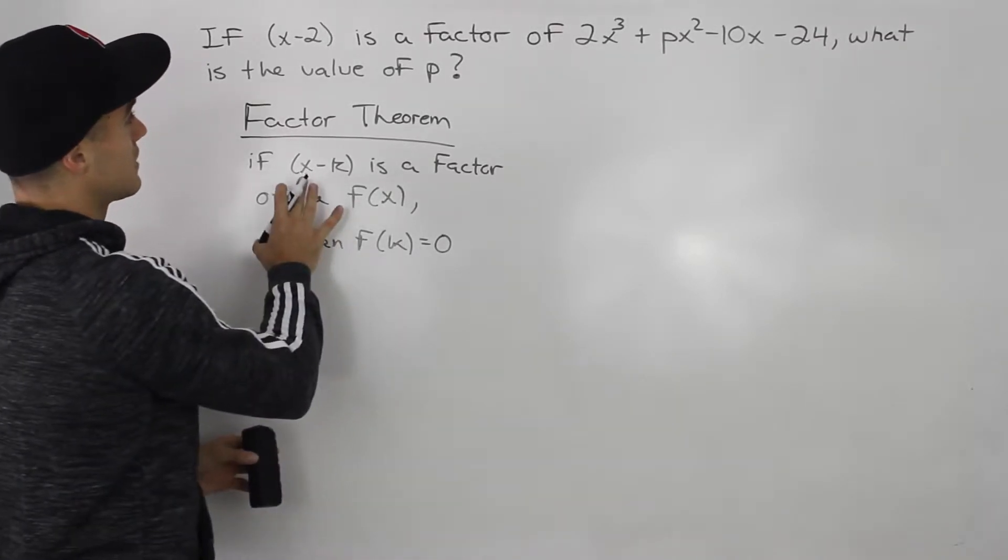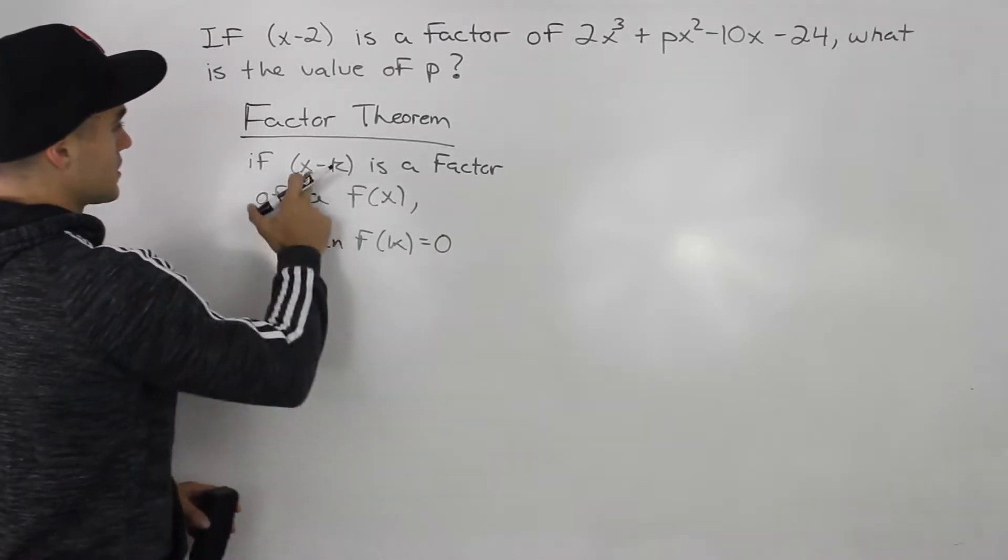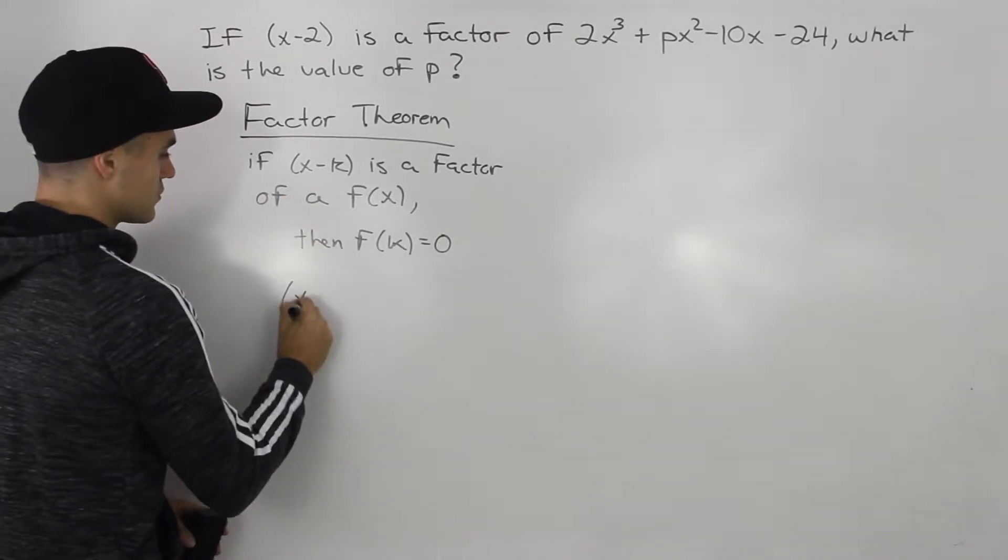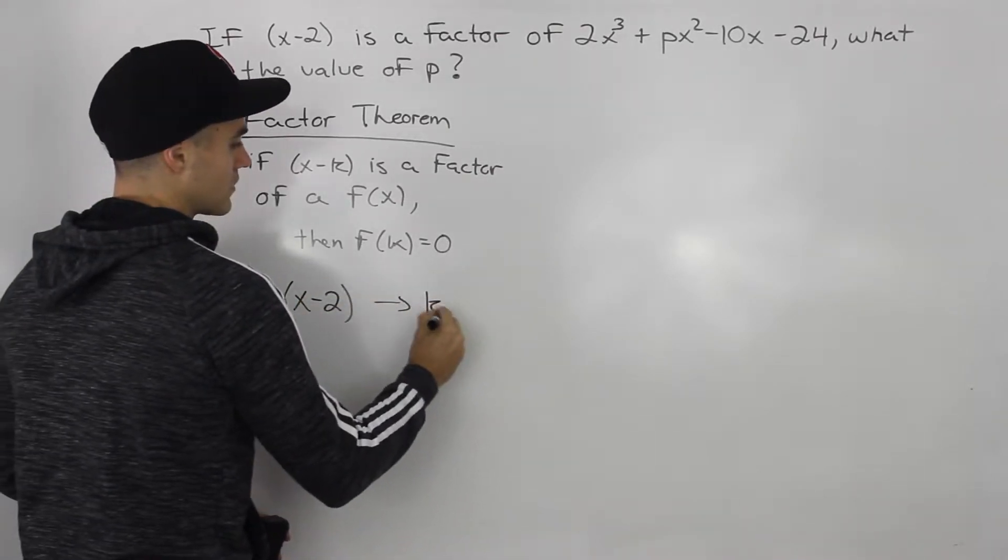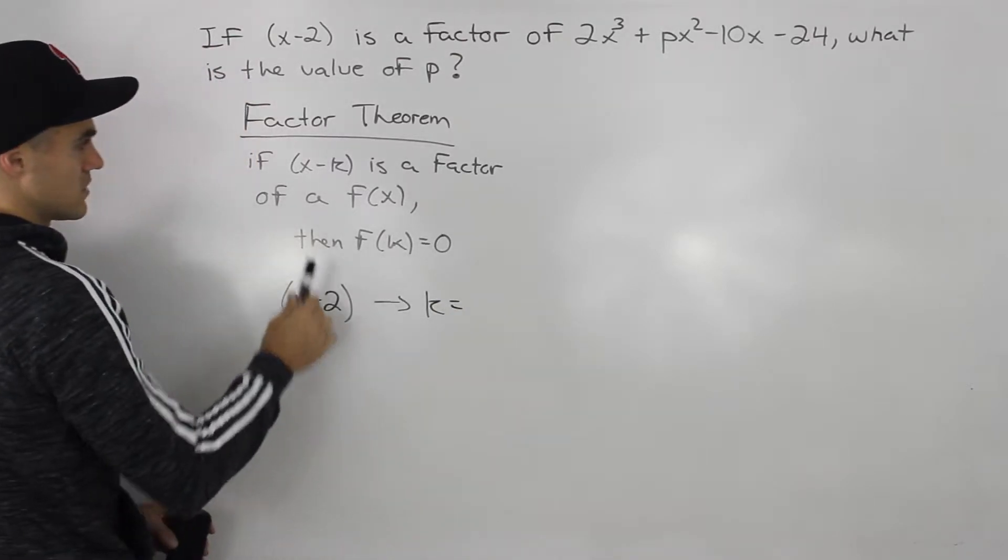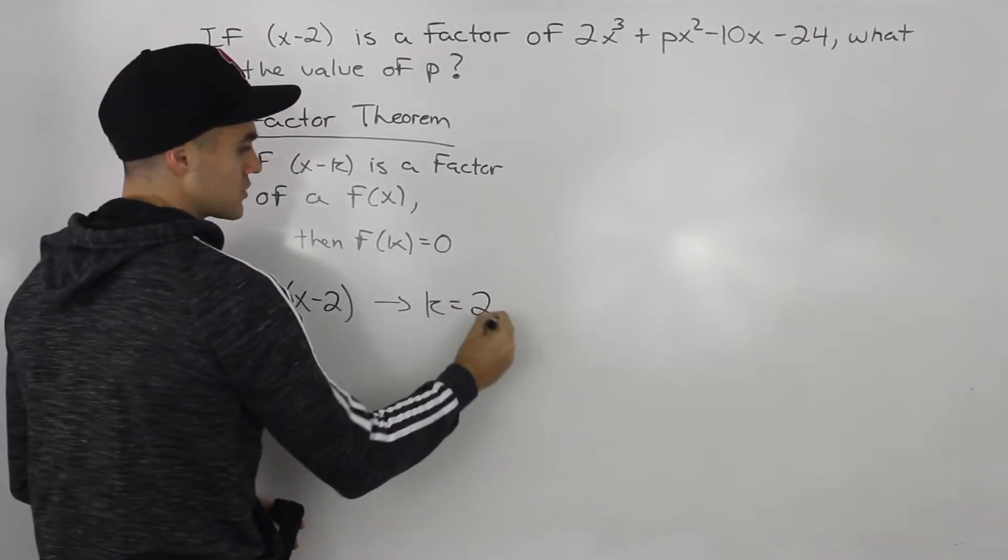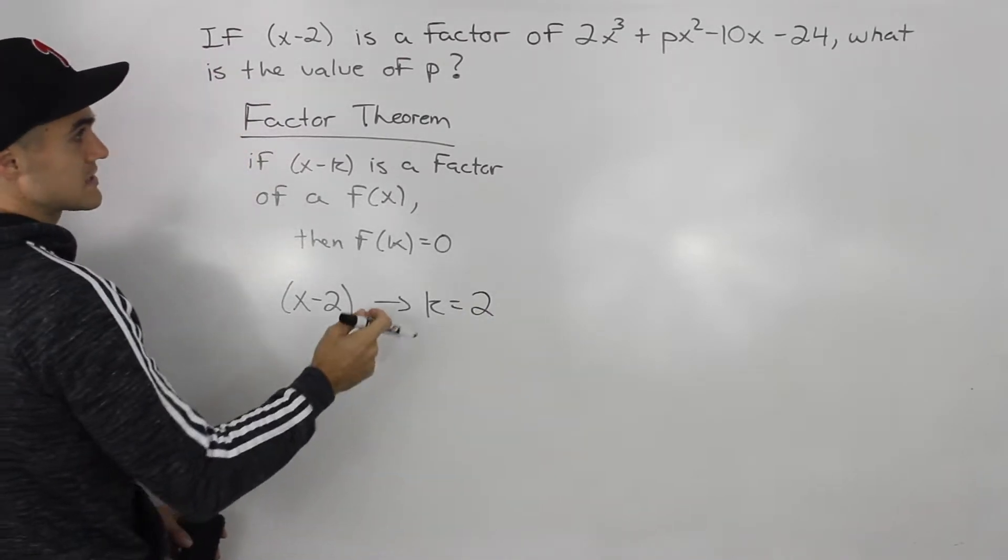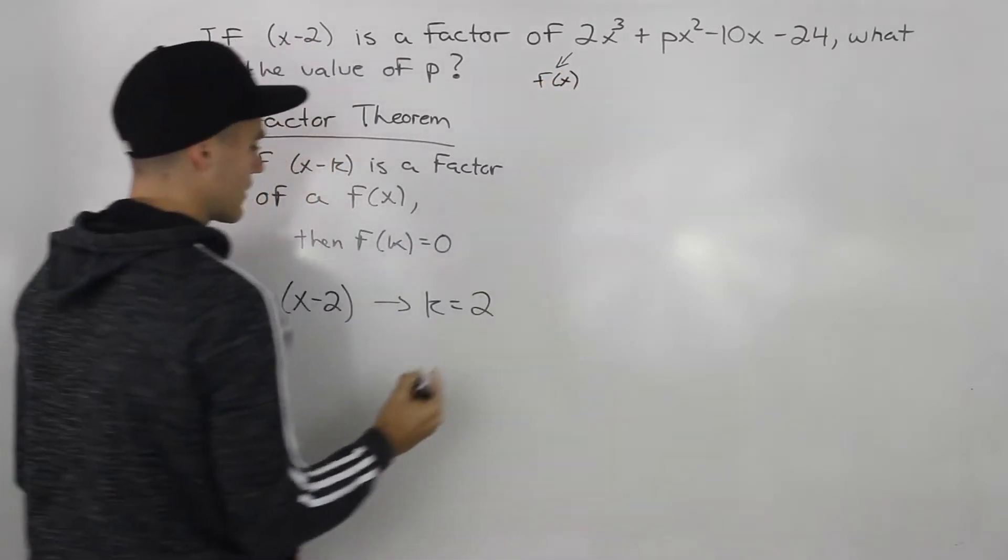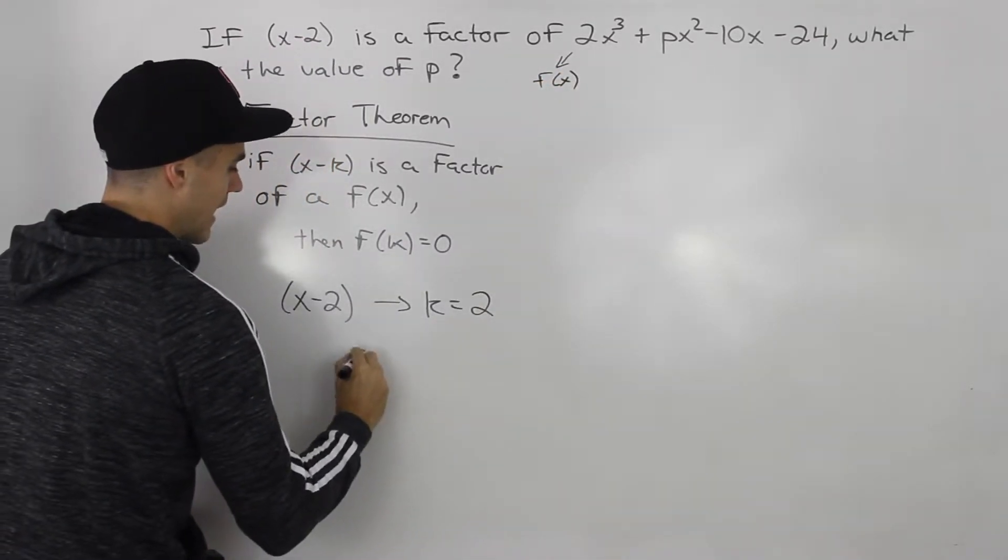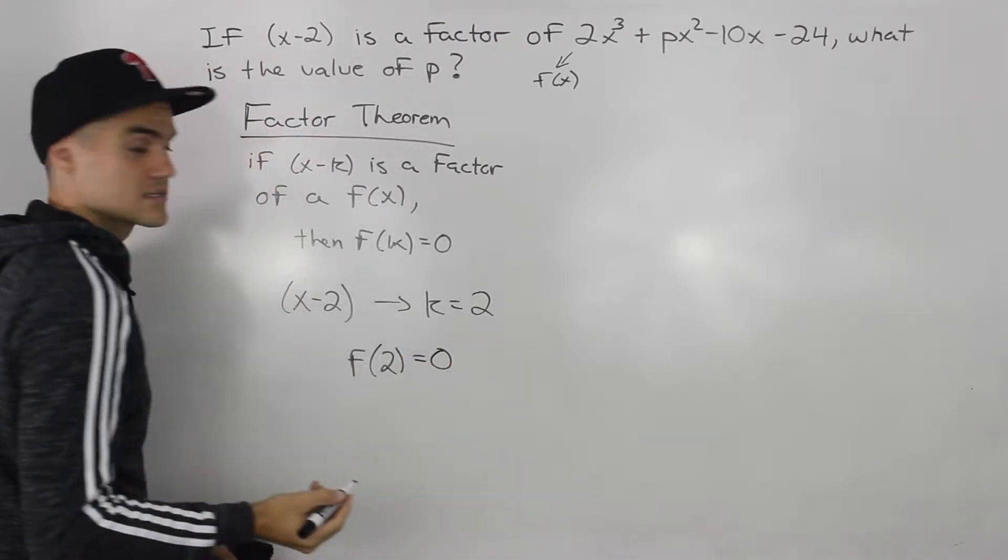So applying this theorem to our specific scenario, notice that x minus 2 is a factor. So then what's our k value in this case? Well, x minus k, x minus 2, that means the k value is 2. And that means that if we label this polynomial here as f of x, that means that f of 2 is going to equal 0.